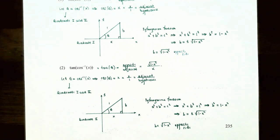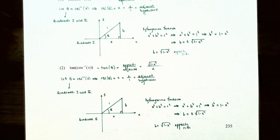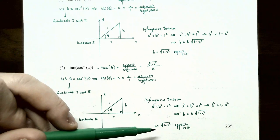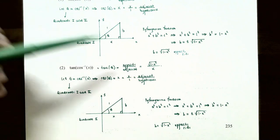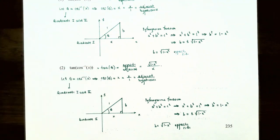Going back to the original problem, tangent of inverse cosine of X equals tangent of theta, which is opposite over adjacent: square root of one minus X squared divided by X. So the algebraic expression for tangent of inverse cosine of X is square root of one minus X squared, all divided by X.